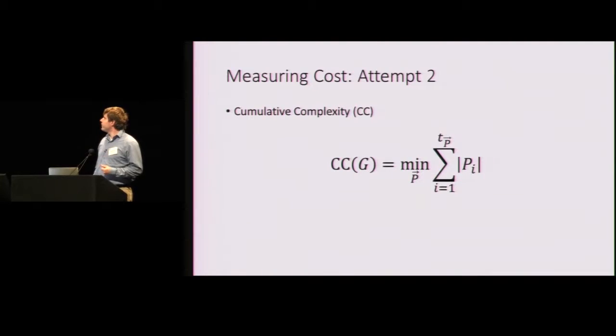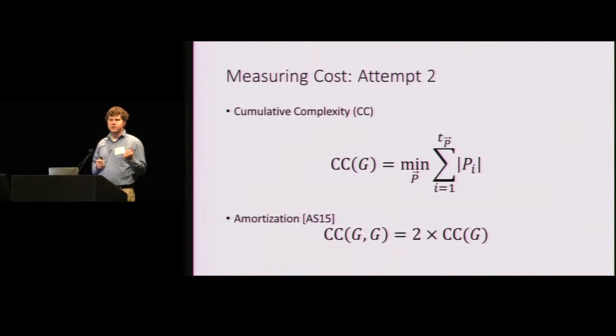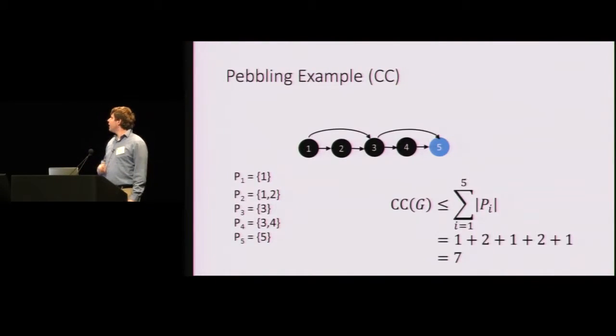All right. So this motivates the need for cumulative complexity, as defined by Alwyn and Serbenenko. Cumulative complexity is just the integral under this curve. So it's the sum over all pebbling steps of the number of pebbles on the graph at that point in time. What's nice about this metric? The first thing is amortization. So the cumulative cost of pebbling two independent instances of the graph is just two times the cost of pebbling one instance of the graph. So this means that the attacker's costs are going to scale with the number of password guesses that he wants to try.